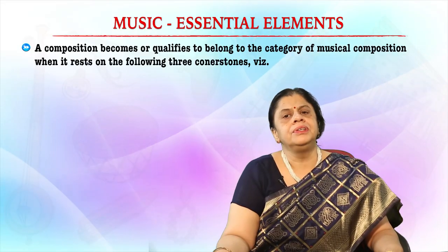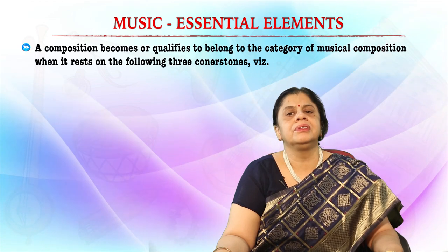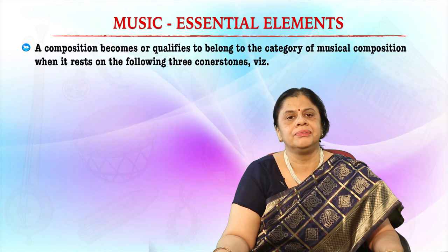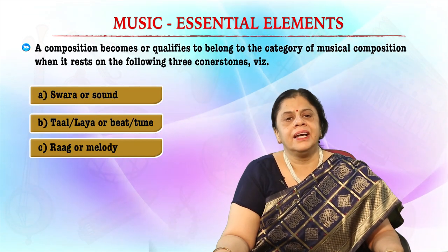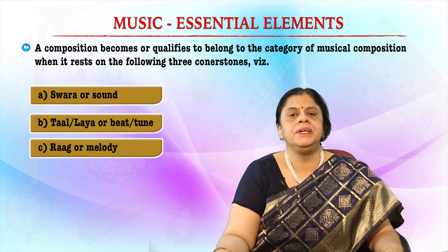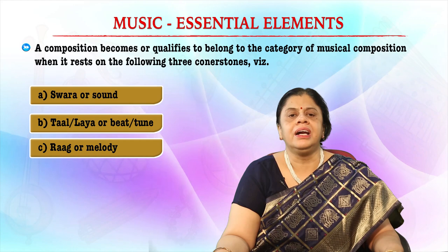Now let us understand the elements which are the most important part of the composition of music. Not all potential renderings automatically qualify to be called musical, so a composition must have some basic character to make it easy for the audience to understand. A composition qualifies as musical when it rests on the following three cornerstones: first, swara or sound; second, tal or lay, which is the beat or tune; and third, rag or melody. These three are the fundamental constituents of music.